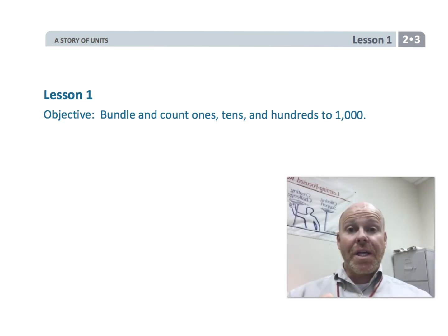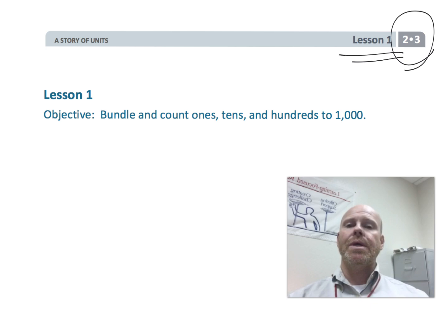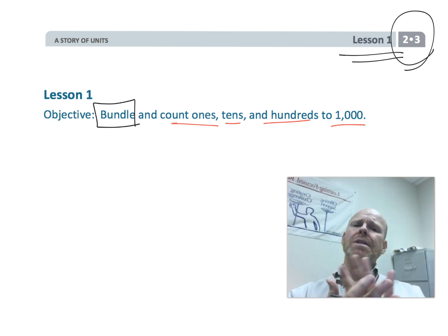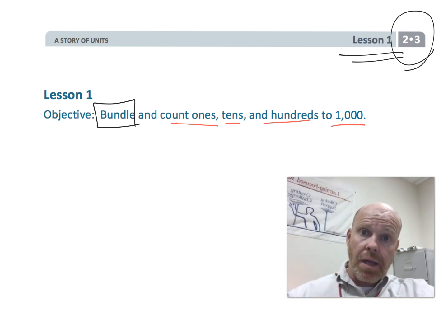All right, this is grade two, module three, lesson one. And in this lesson, we are going to be bundling popsicle sticks and imagining popsicle sticks in order to count ones, tens, hundreds, all the way up to a thousand. The idea is we're going to be using these physical popsicle sticks as a physical representation of the place value system that students are going to be learning as they move on into higher grades.